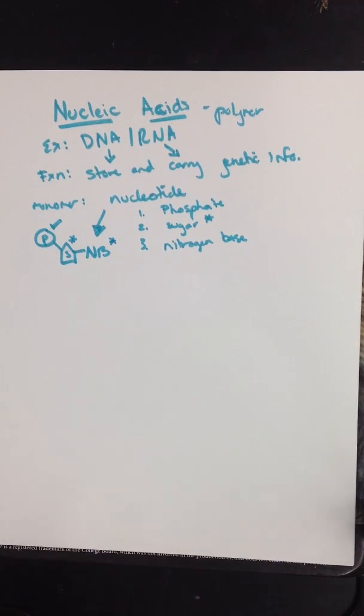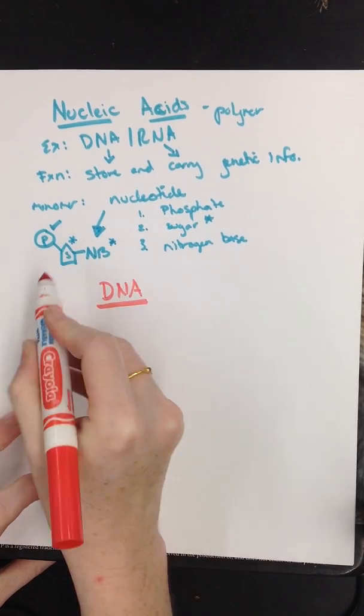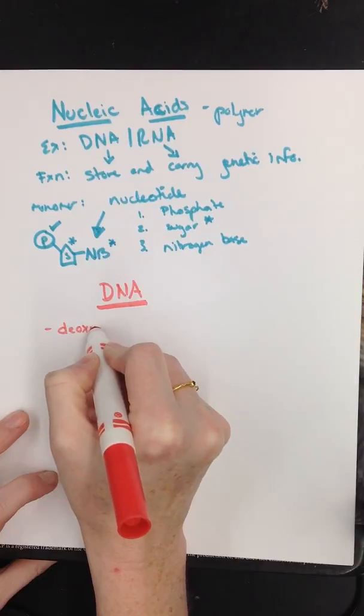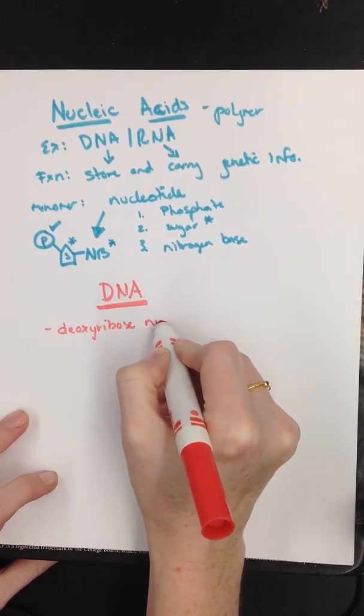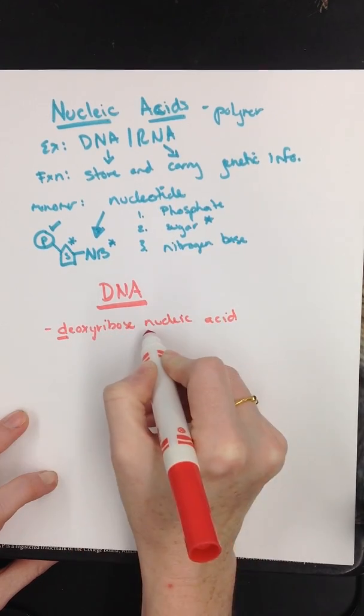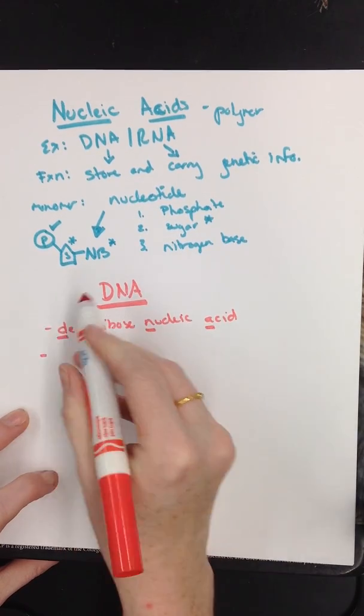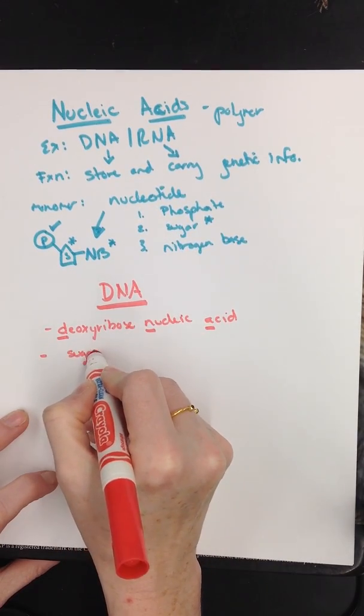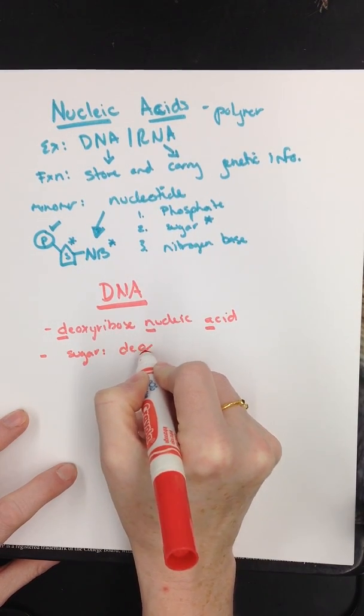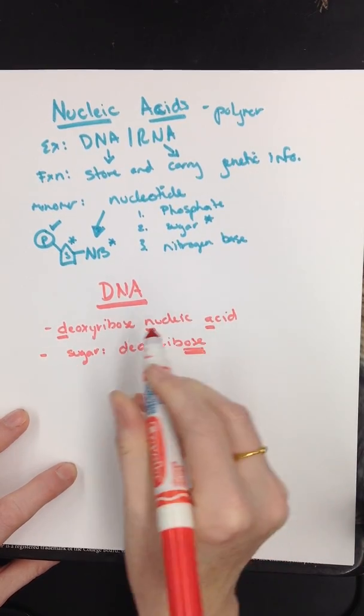Now let's talk about DNA, because this is what we've learned about so far. DNA stands for deoxyribose nucleic acid. The sugar in DNA is deoxyribose. And we know it's a sugar because it ends in OSE.